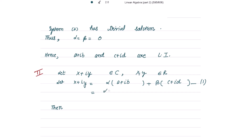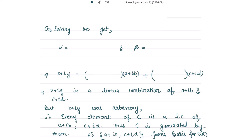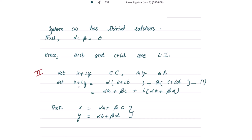Expanding: (αa + βc) + i(αb + βd) = x + iy. Equating real and imaginary parts: x = αa + βc and y = αb + βd. Solving these two equations for α and β, we get α = (dx − cy) / (ad − bc) and β = (ay − bx) / (ad − bc).